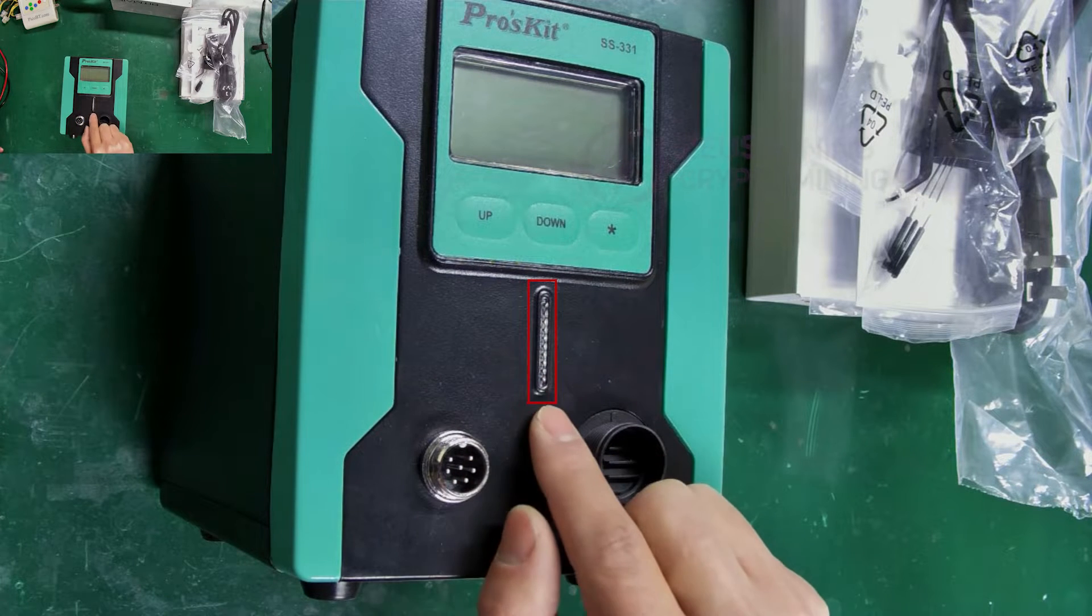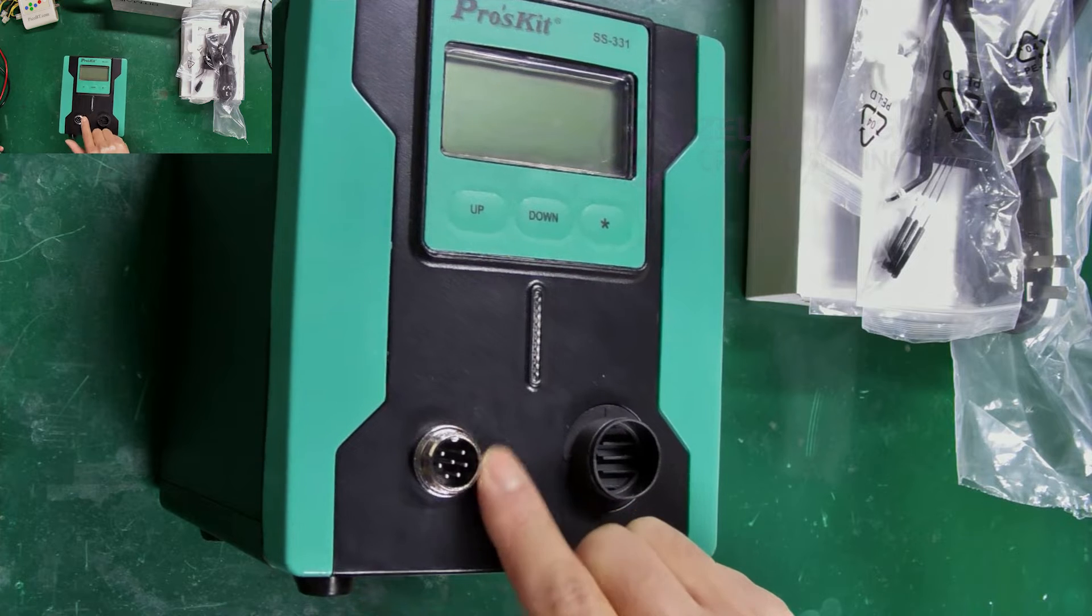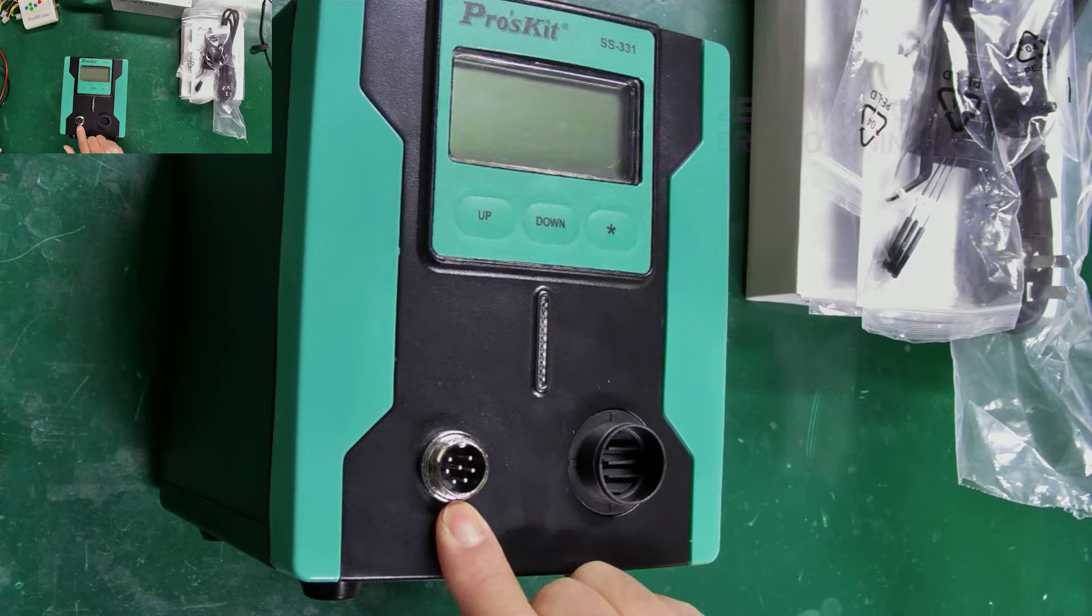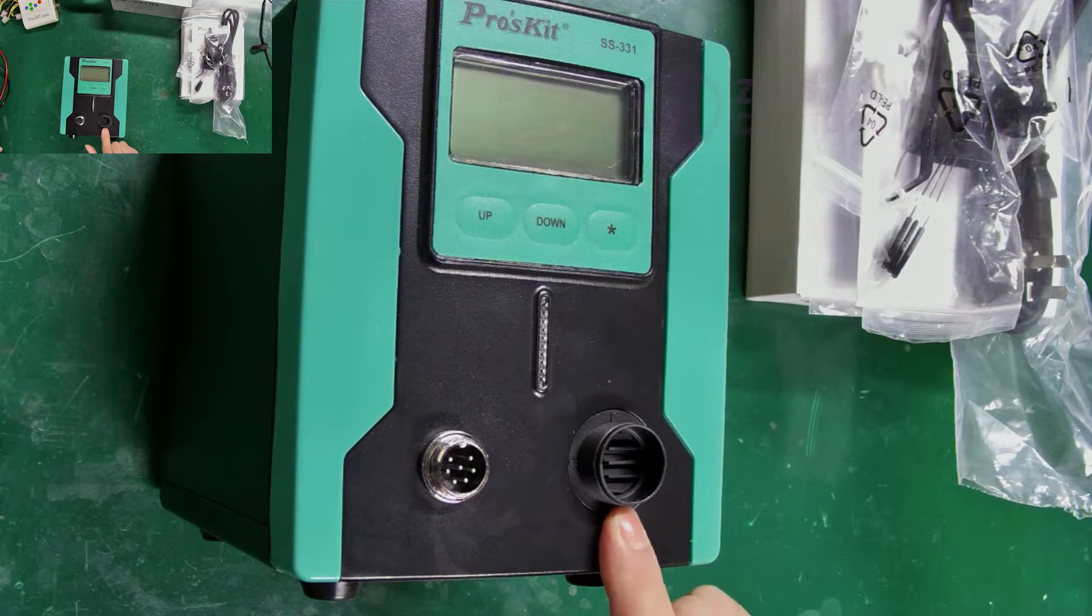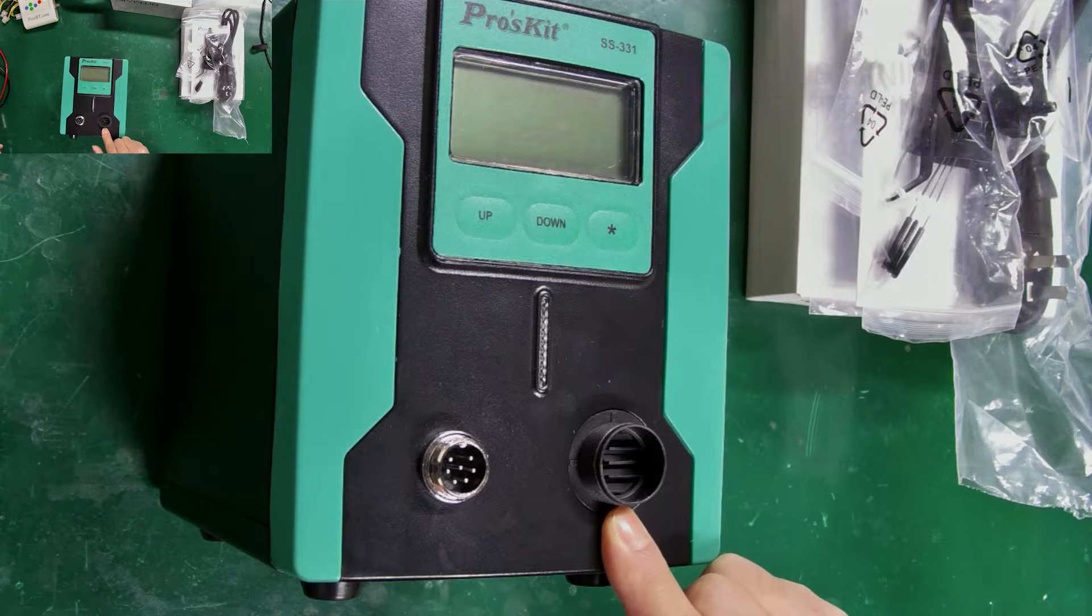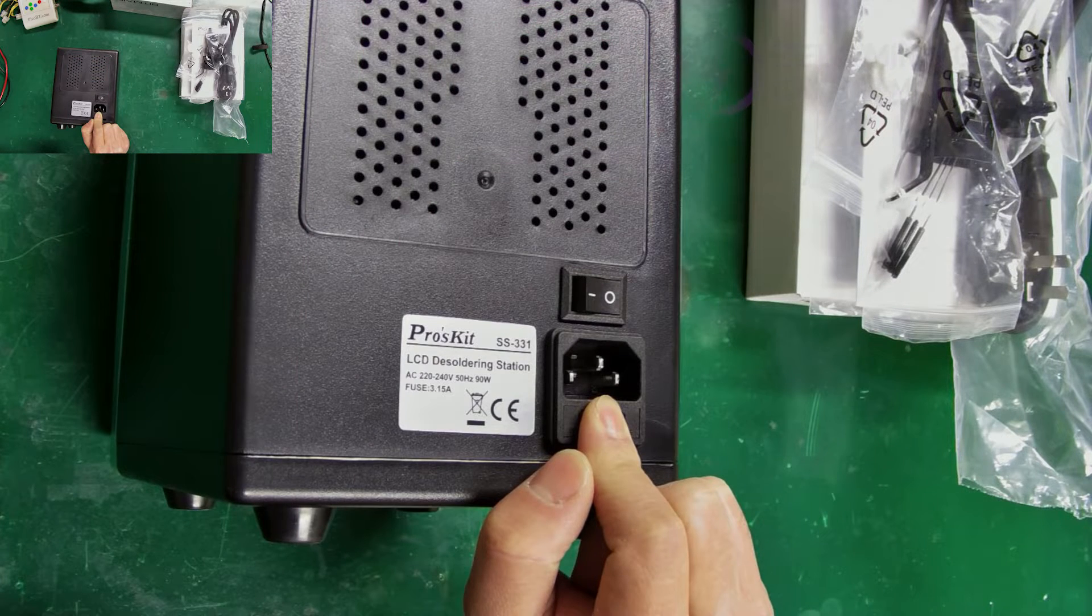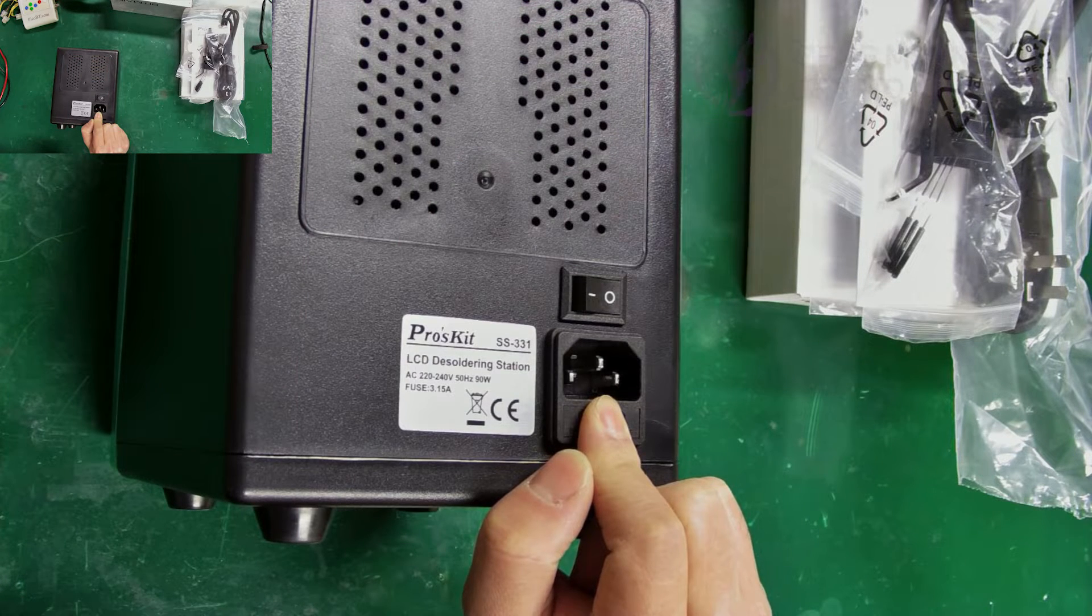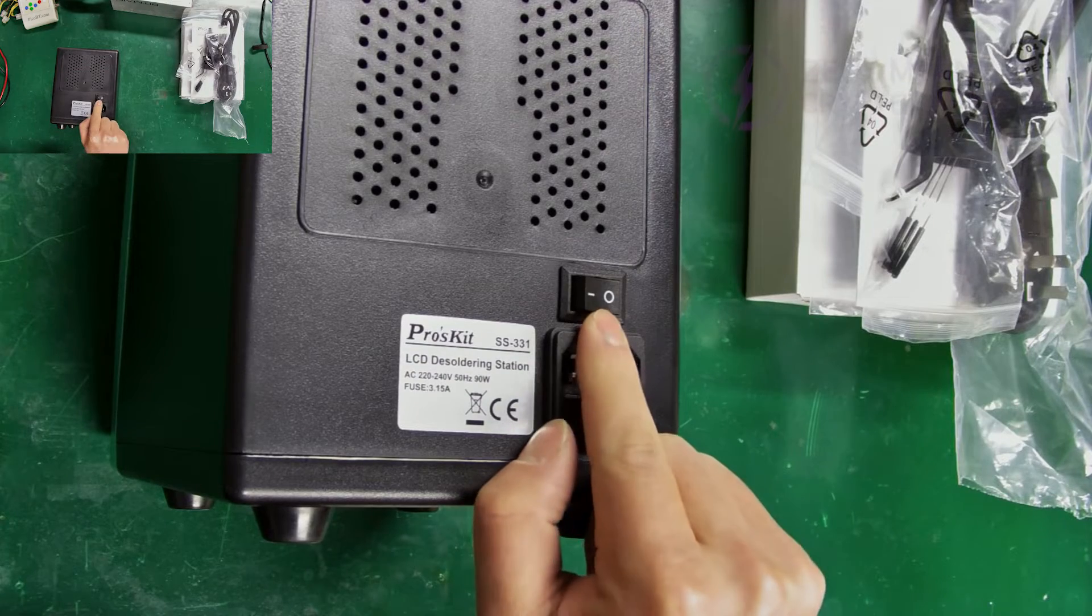This is the suction pump indicator. On the left is the soldering iron heating connector, and on the right is the vacuum pump connector. On the back of the main unit, there is an AC input power port and a switch.